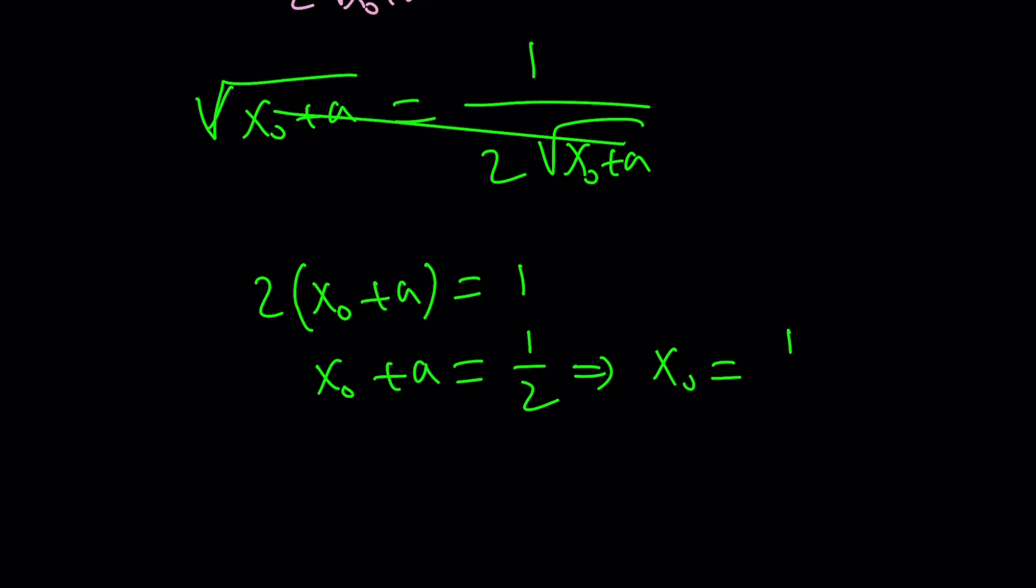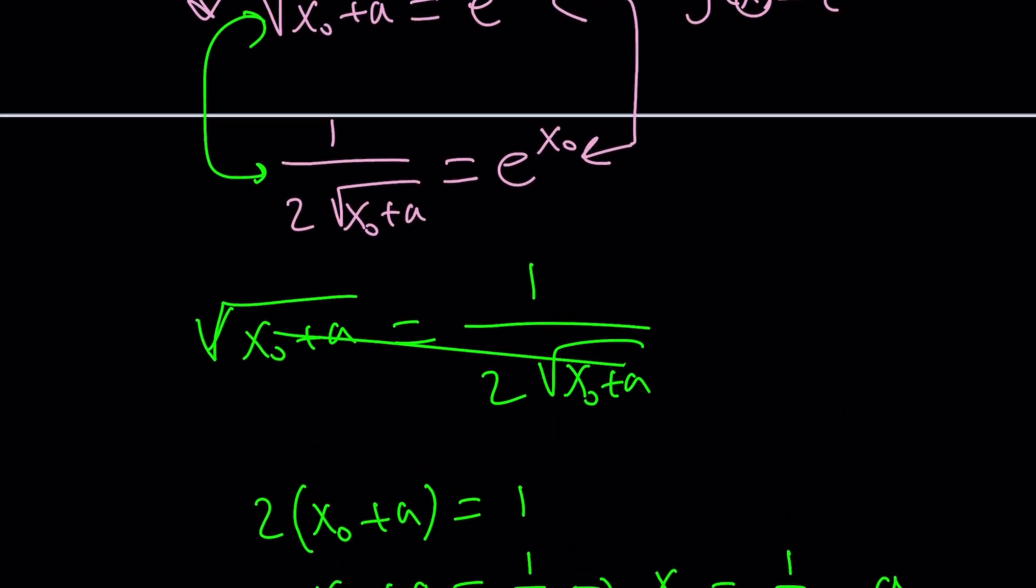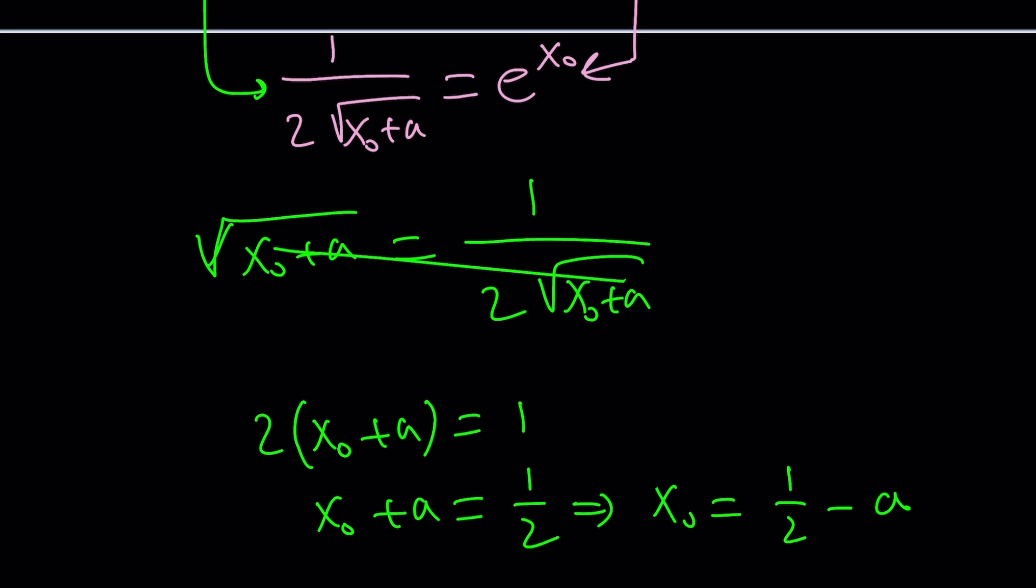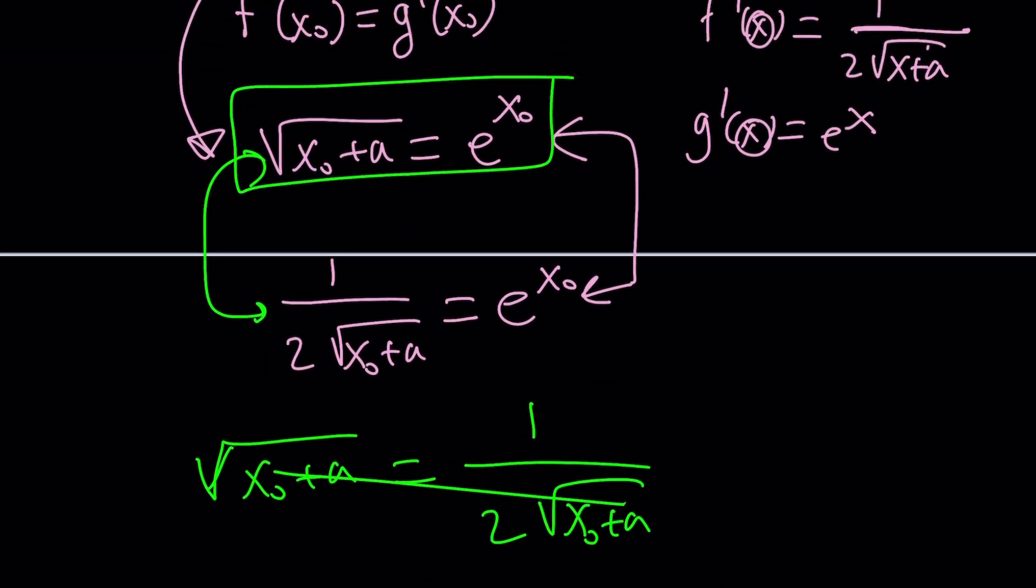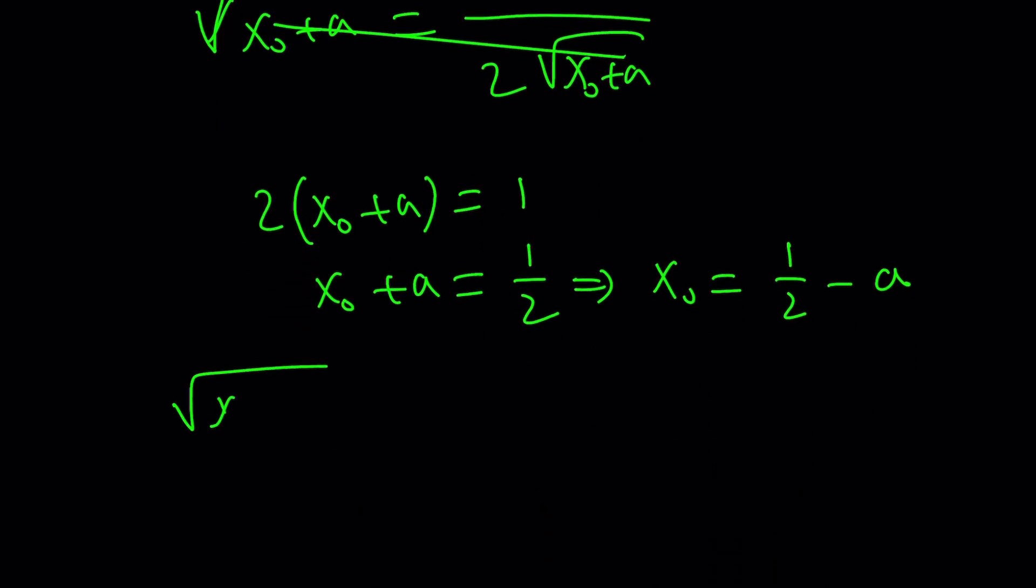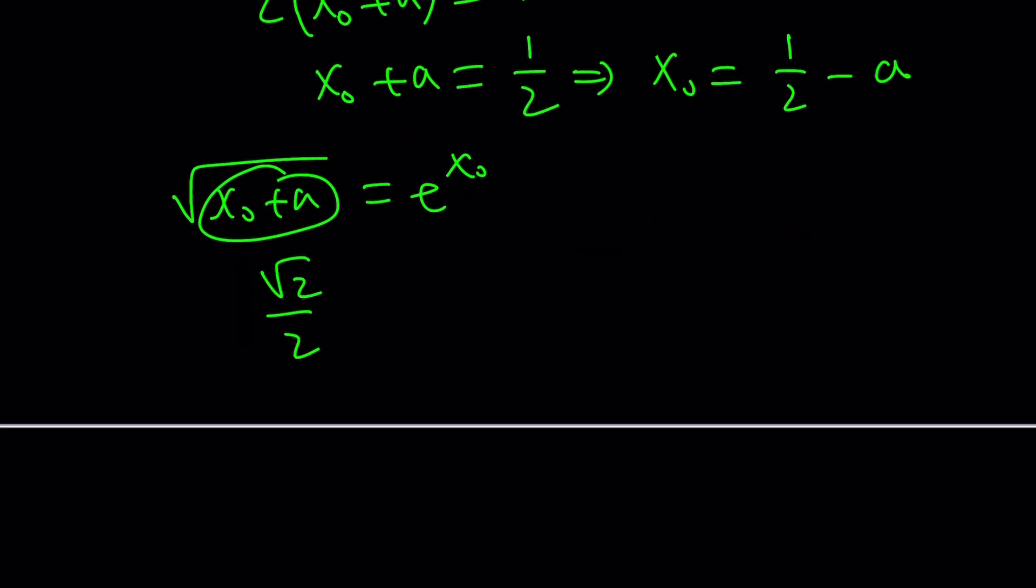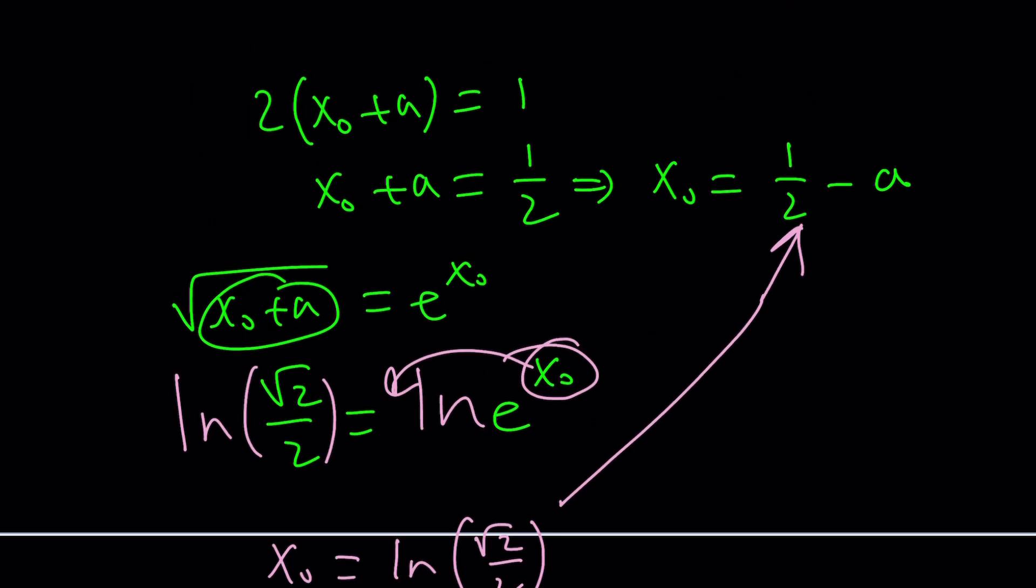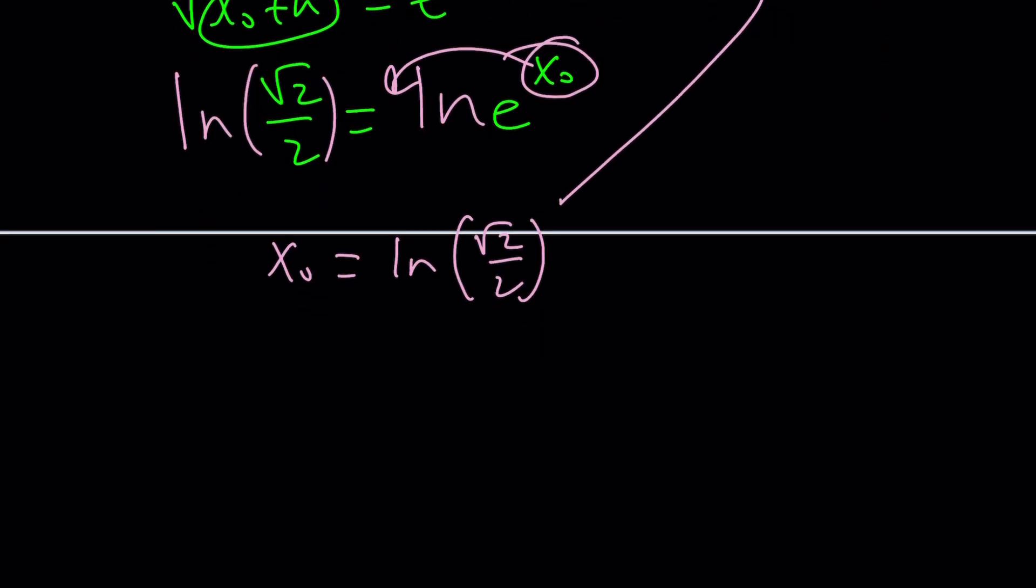And from here, x sub 0 becomes 1 half minus a. Okay, but that doesn't give us the value of x sub 0, yet it does actually if you plug it in. Look at this. We could use this and replace x sub 0. And now we're going to replace this with 1 half. Square root of 1 half, which is root 2 over 2, is e to the x 0. And then go ahead and ln both sides. That's going to give you the answer. And then from here, you're going to get x sub 0 equals ln root 2 over 2. And if you plug it in here, you get a. Well, actually, a is 1 half minus x 0, so a is just going to be 1 half minus ln root 2 over 2.